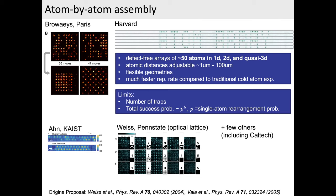The limits on system size: first, you don't have infinite laser power to make traps deep enough to trap atoms out of a cold cloud. Second, the global probability of doing everything right scales exponentially with system size — if you have a single-atom success probability p for correctly identifying, moving, and re-imaging each atom, then the global success probability is p^N, so each step must be carried out with very high fidelity to make this halfway scalable. That's not often talked about but it's actually very important.